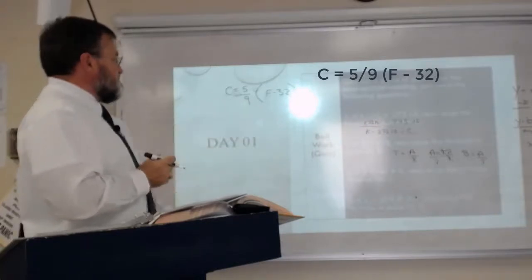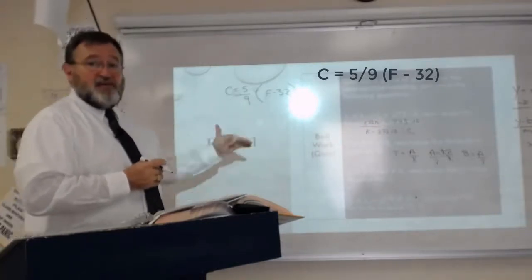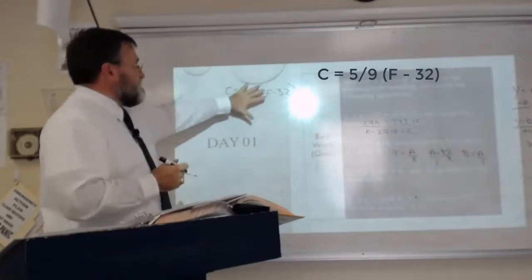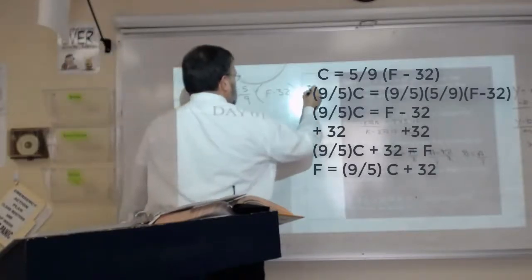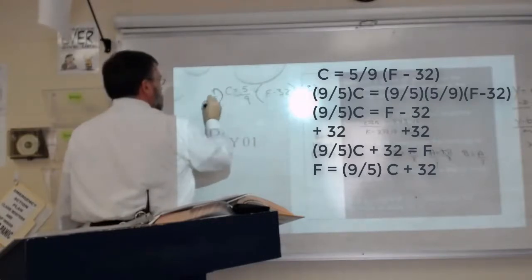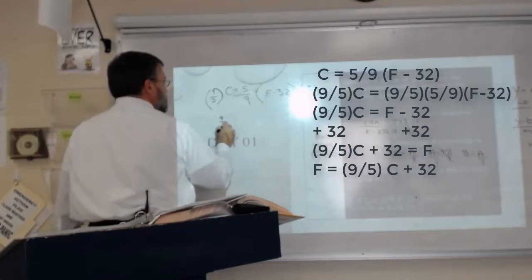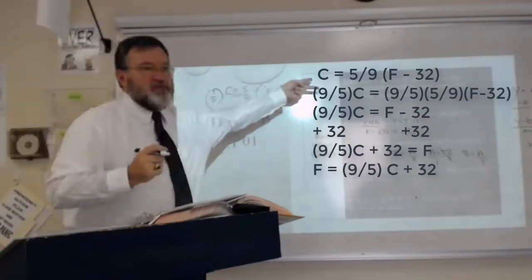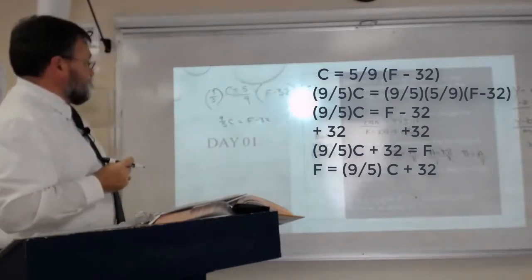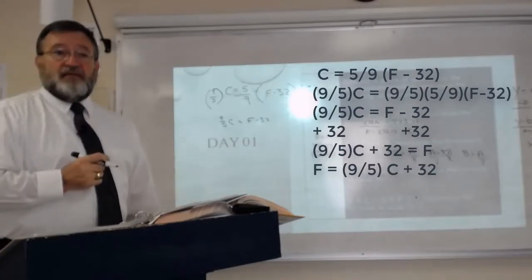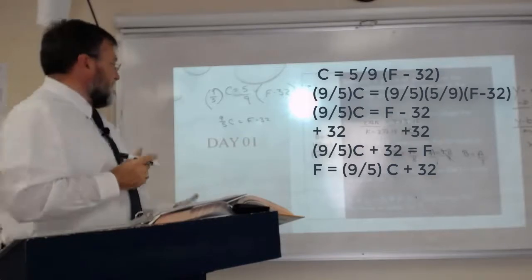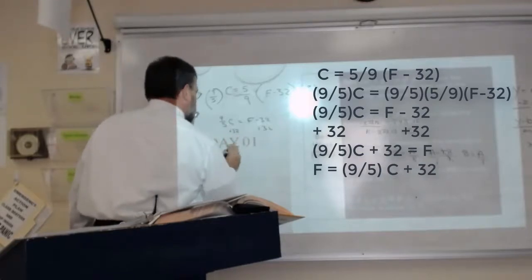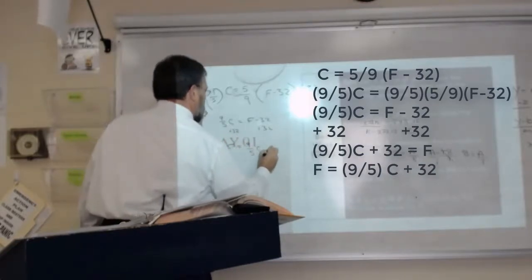If we're trying to rearrange to solve for F, the first thing we have to do is get rid of this coefficient. Multiply by the inverse, nine-fifths. Nine-fifths Celsius equals Fahrenheit minus 32, because something times its reciprocal is always equal to one. Then to get Fahrenheit by itself, add 32. Fahrenheit equals nine-fifths Celsius plus 32.